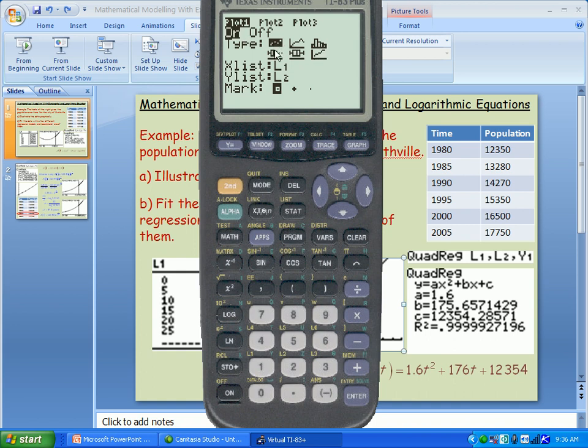You have several different types of graphs you could draw. Make sure that you tell it to pick up the list that you typed them in. For example, if you type them in list 2 and 3, make sure it says list 2 and 3. Mine were list 1 and 2.